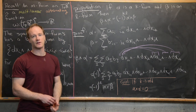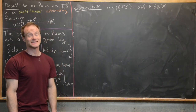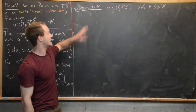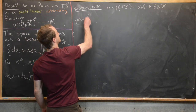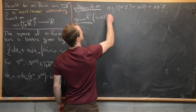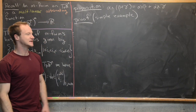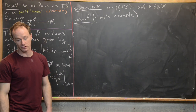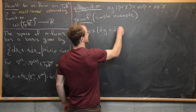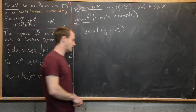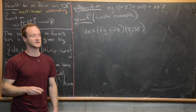Our next proposition — which we'll sketch via a simple example — is that the wedge product distributes over addition. We'll do a proof by simple example; this gives the key idea, and the general case follows by writing forms as linear combinations of elementary forms. Let's look at dx ∧ (dy + dz) and evaluate it on a pair of vectors v and w.